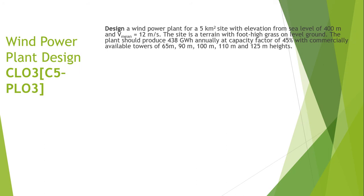Hello and Assalamualaikum. This is a continuation of lecture number 28. In this part of the lecture we will see an example in which we will design a wind power plant. The specifications for the required wind power plant design are as follows: we have to design a wind power plant for a 5 square kilometer site with elevation from sea level of 400 meters, and the mean wind speed in that region is 12 meters per second.